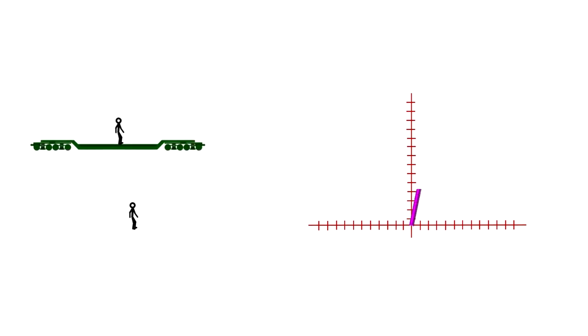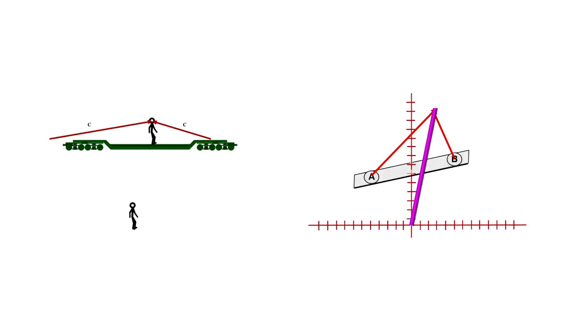In order for the light to reach the person on the train at the same time, the strike behind him will need to hit first from the person on the ground's point of view, because it will have to travel further to get to the moving person than the light from the strike that hits in front of him. So we see that the simultaneity plane for the moving person is necessarily tilted up on the right.